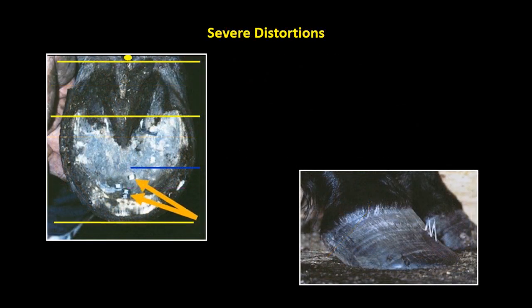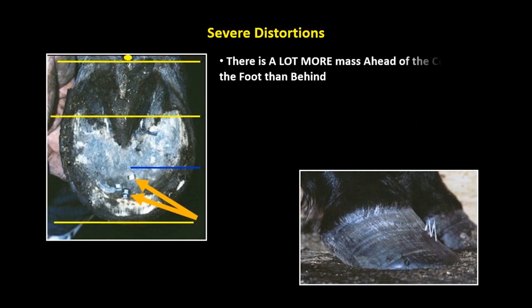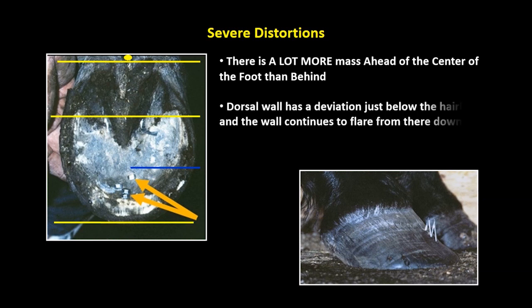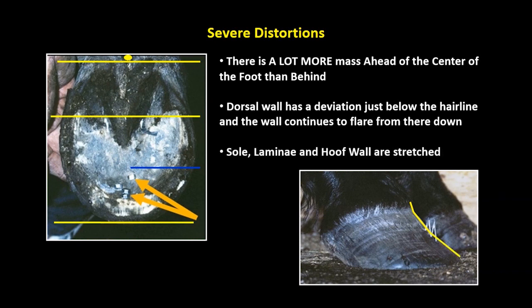Severe distortions: there is a lot more mass ahead of the center of the foot than behind. The dorsal wall has a deviation just below the hairline and the wall continues to flare from there down. The sole, lamina, and hoof wall are stretched.